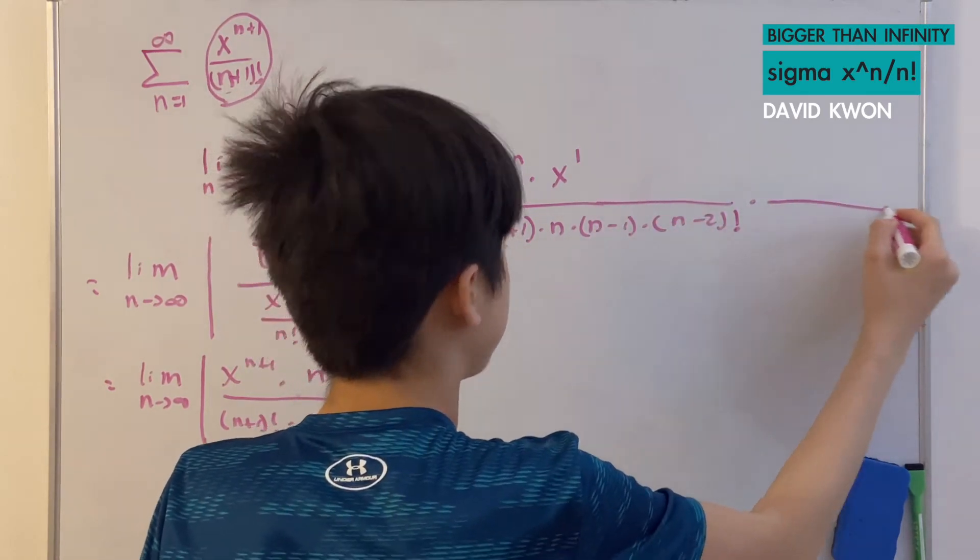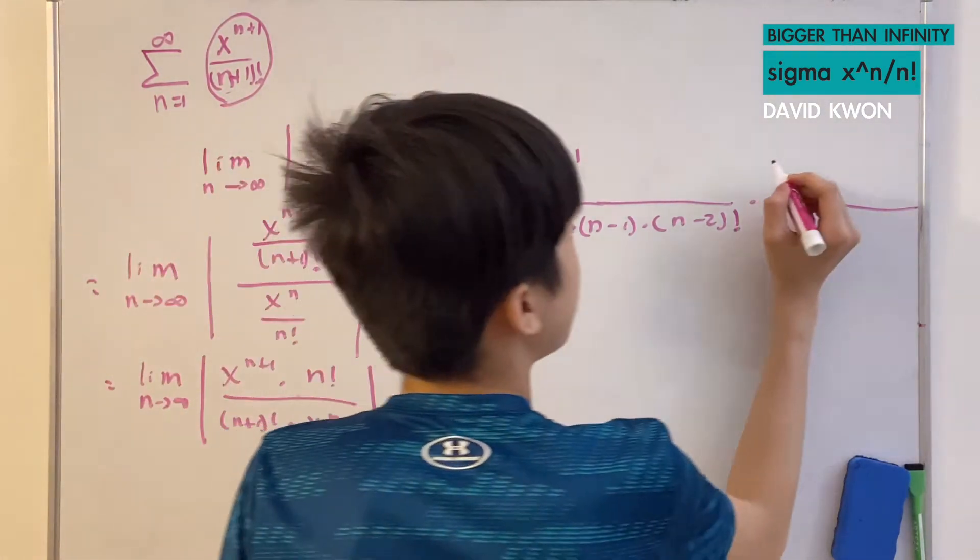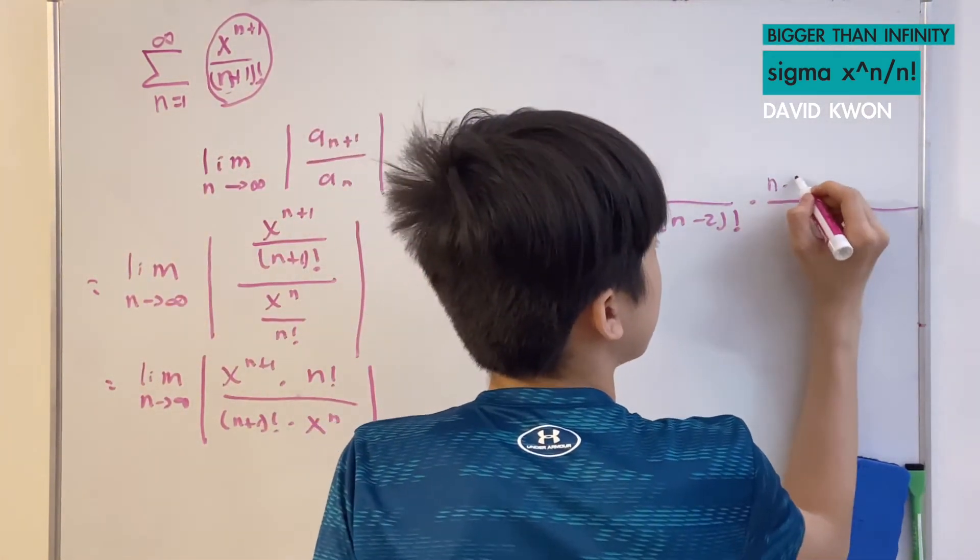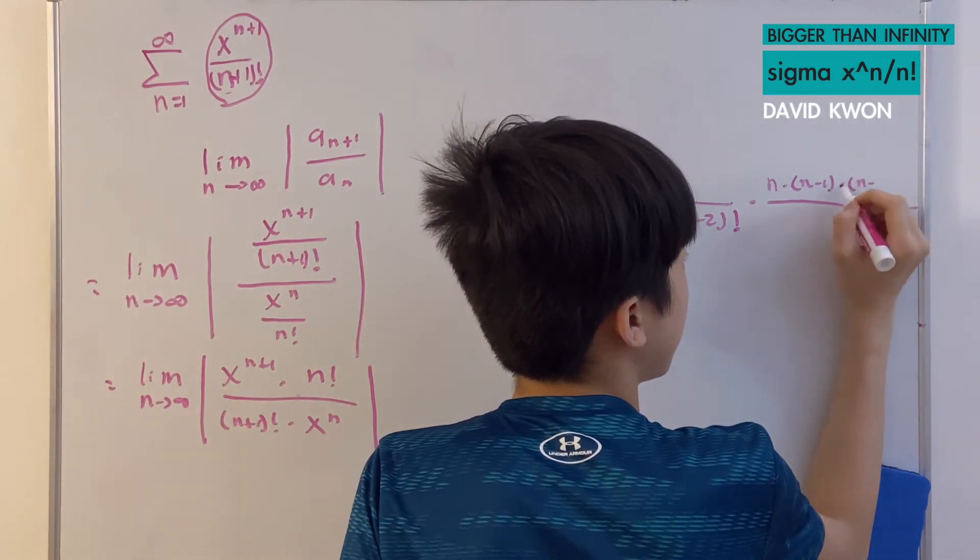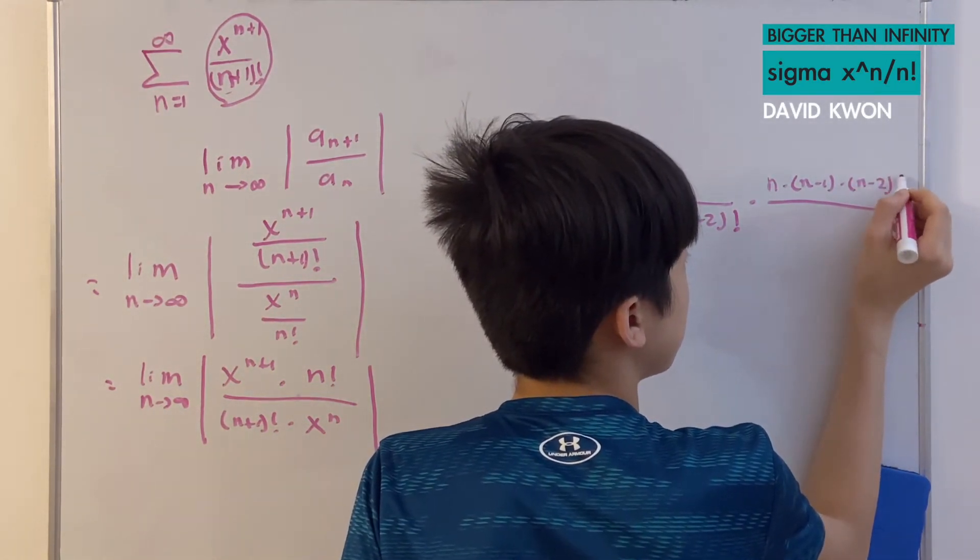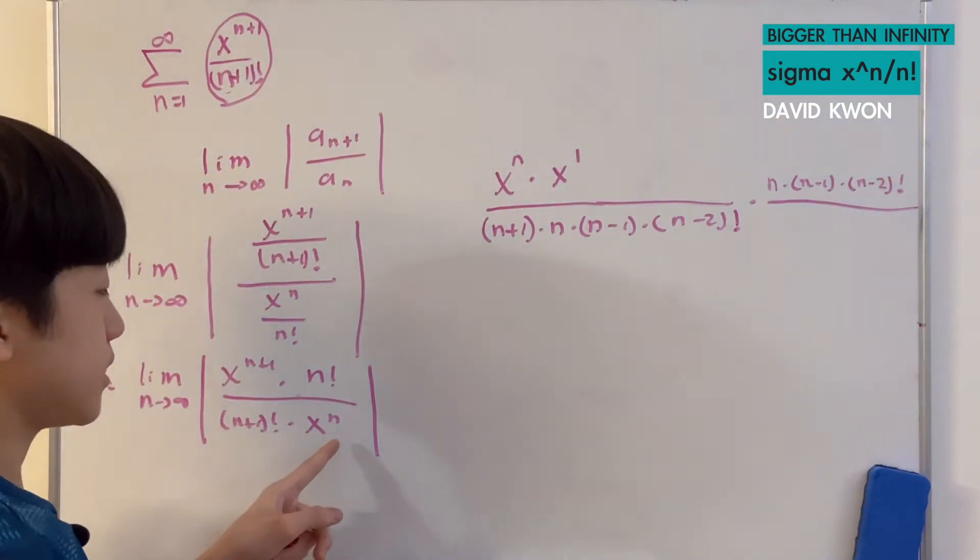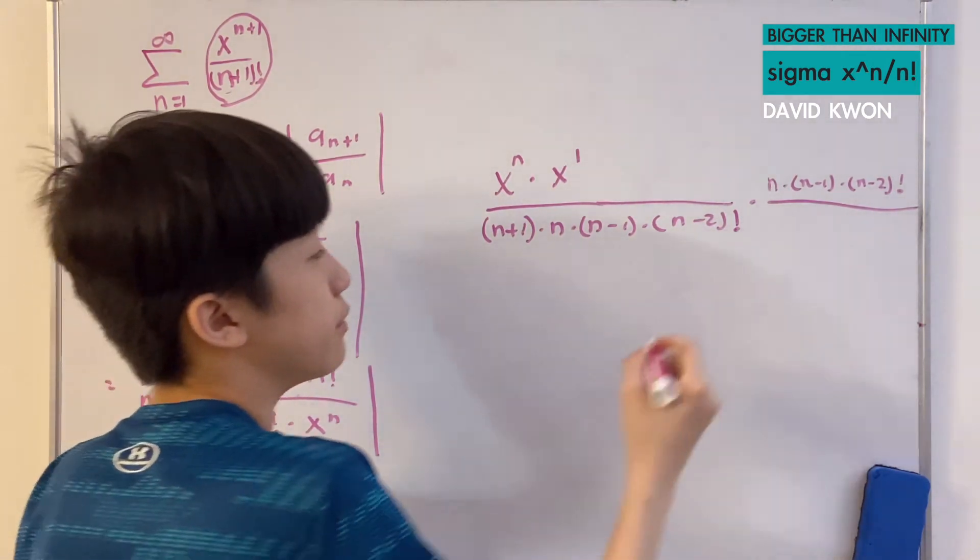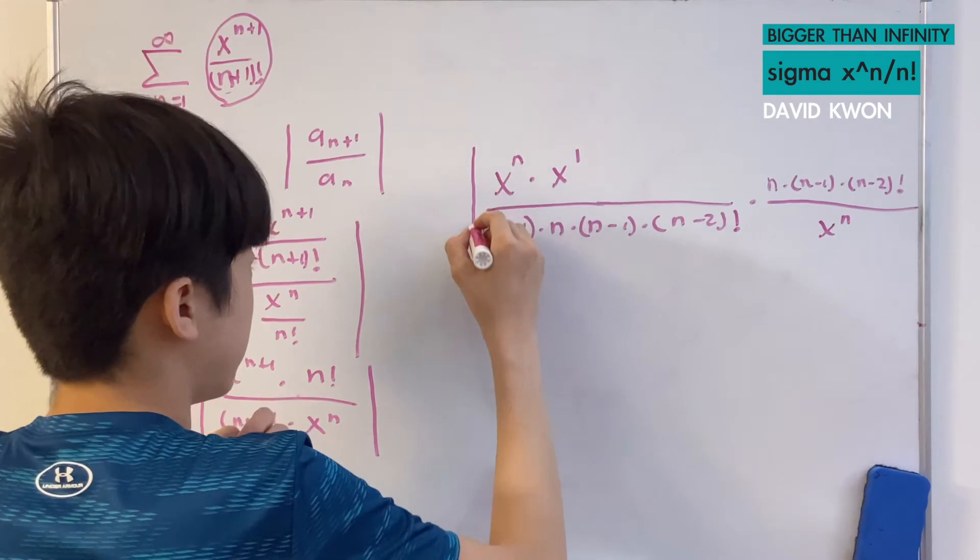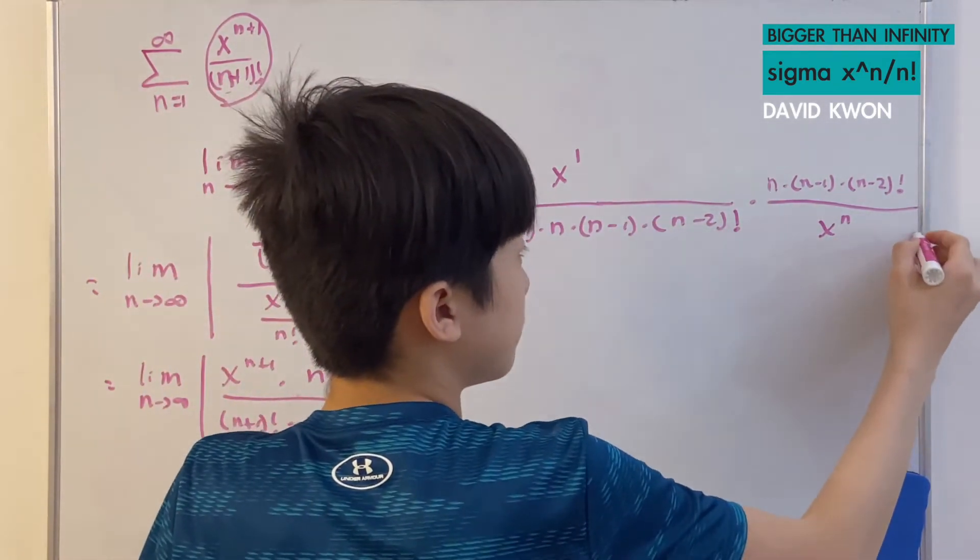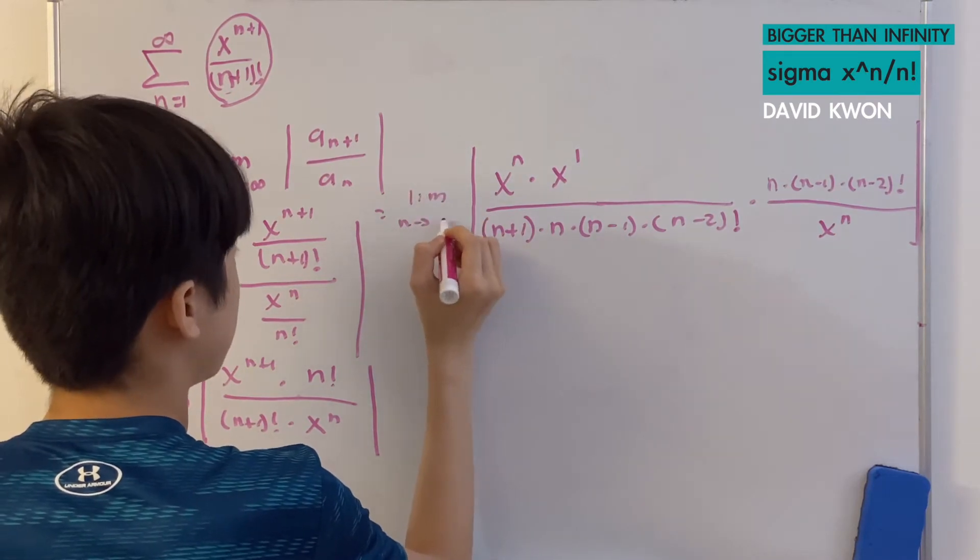And then we have times n factorial. n factorial is n times n-1 times n-2, and then I will cut it short right there as well. Over x to the power of n. You really can't simplify anything like that. So we just write it as what we got. An absolute value sign and a limit as n approaches infinity.